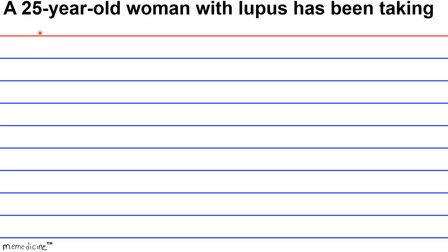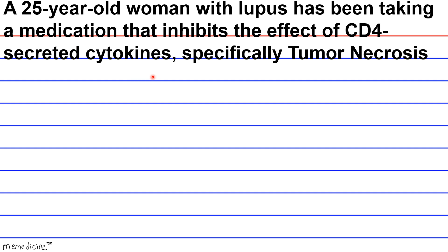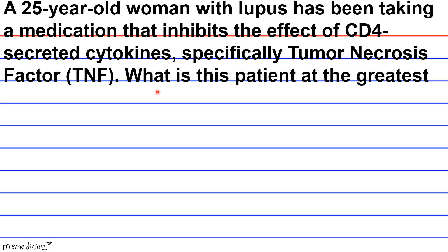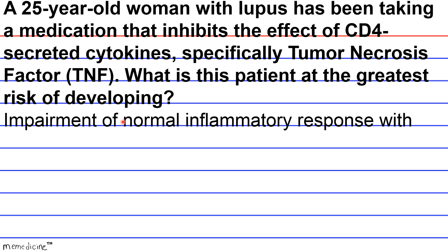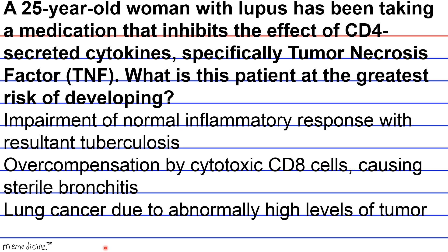Question: A 25-year-old woman with lupus has been taking a medication that inhibits the effect of CD4-secreted cytokines, specifically tumor necrosis factor (TNF). What is the patient at greatest risk of developing? A) Impairment of normal inflammatory response with resultant tuberculosis; B) overcompensation by cytotoxic CD8 cells causing sterile bronchitis; or C) lung cancer due to abnormally high levels of tumor necrosis factor?